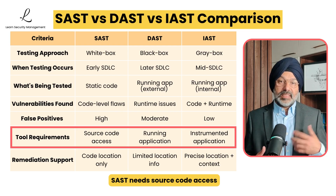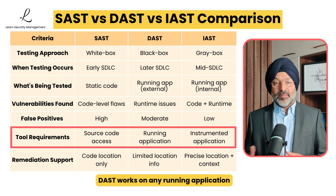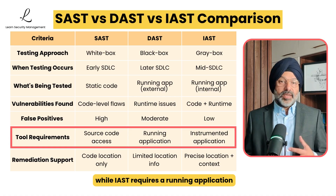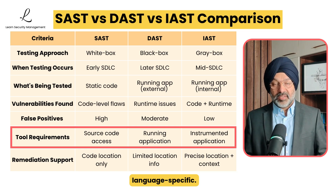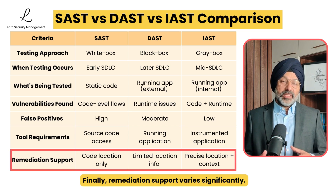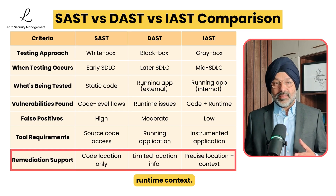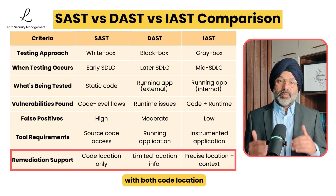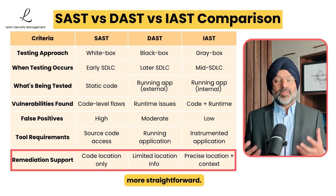Tool requirements differ as well. SAST needs source code access with language-specific tools. DAST works on any running application regardless of language. While IAST requires a running application with instrumentation capabilities and is generally language-specific. Regarding remediation support, SAST pinpoints code location but lacks runtime context. DAST identifies issues but may not locate their source code cause. While IAST precisely locates issues with both code location and runtime context, making remediation much more straightforward.